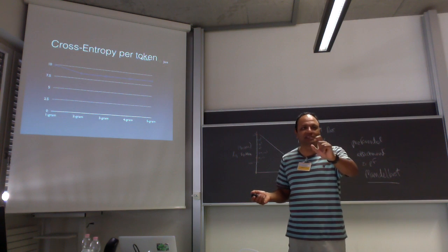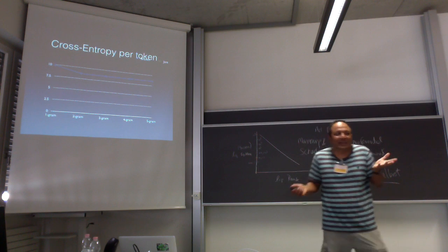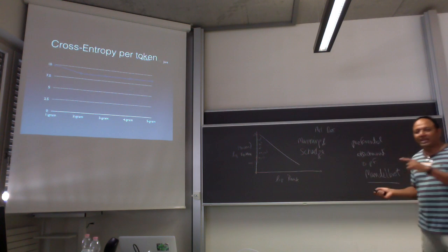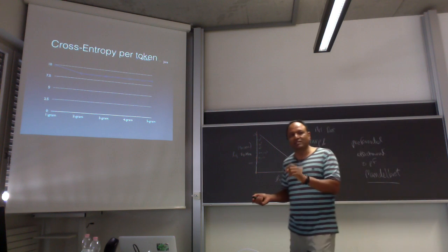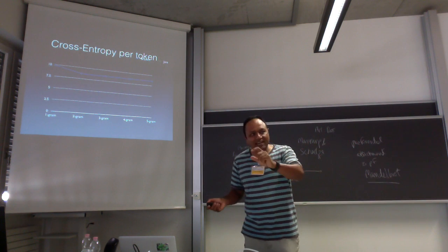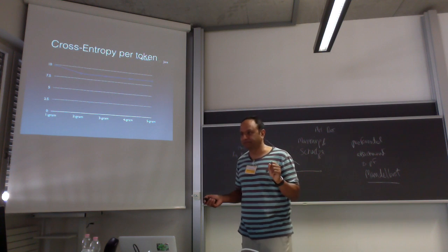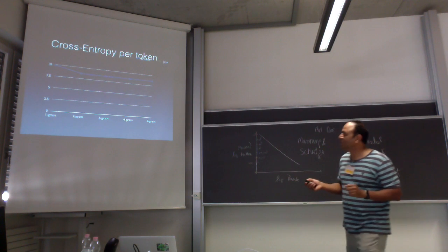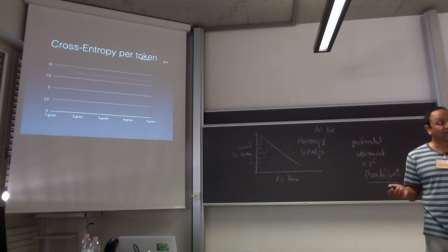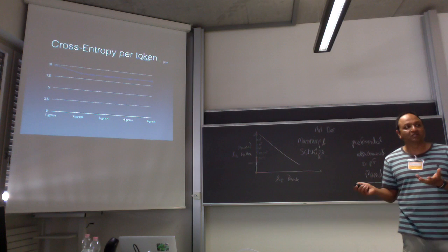So in theory, you could replace each English word by a character. Turing did a series of experiments with English characters, and found that each character of English has somewhere between one and two bits of information. So with a good language model, each English word is about the same order of information as a byte.